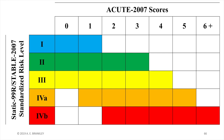To make that last point clear: the average score on acute in the normative sample is 2, but a score of 2 has different interpretations at different risk levels. At level 1, a score of 2 would place an individual at the 85th percentile - this individual is quite unlike most at level 1, and additional risk management steps may be required. For an individual at static-stable level 4b, a score of 2 places them at the 22nd percentile, meaning over 75% of individuals at level 4b have more current behavioral or circumstantial problems.